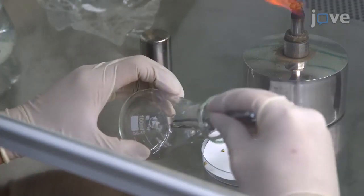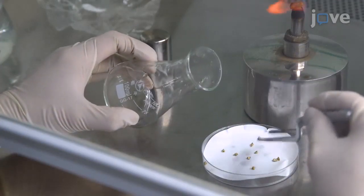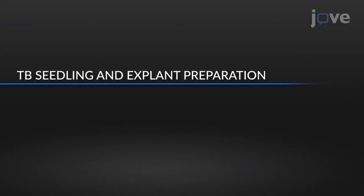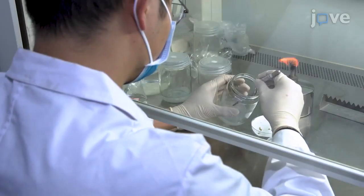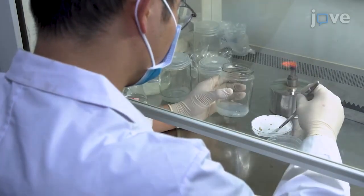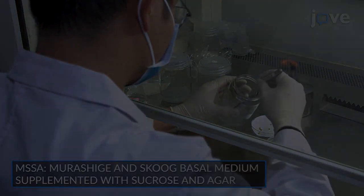Then blot the seeds dry with a piece of sterile, bibulous paper. To obtain Tartary buckwheat seedlings, add 10 seeds per bottle to individual 300 milliliter plant tissue culture bottles containing 50 milliliters of...